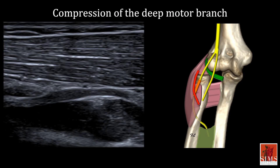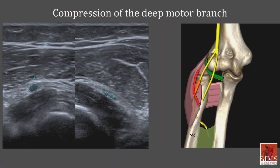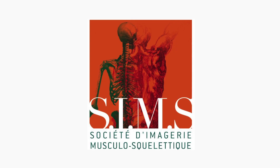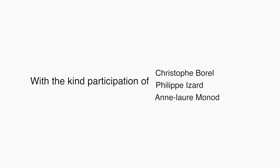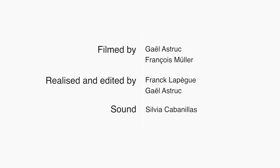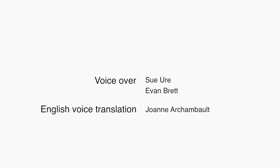Compression of the deep branch of the radial nerve is clearly seen here at the arcade of Froese. The ultrasound shows fusiform thickening, loss of fascicular appearance, and hypoechogenicity of the deep branch. This appearance was confirmed by comparing the sagittal and axial views.